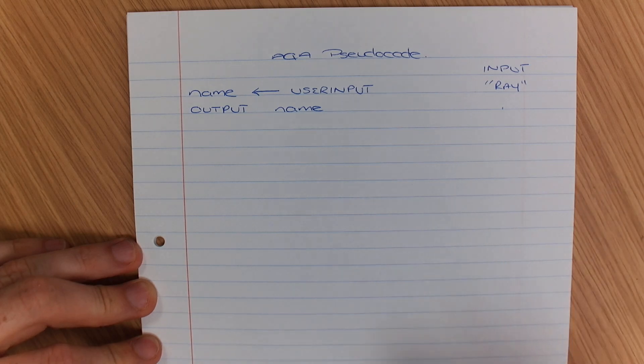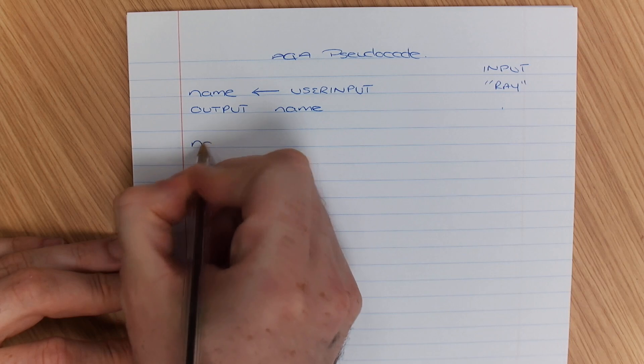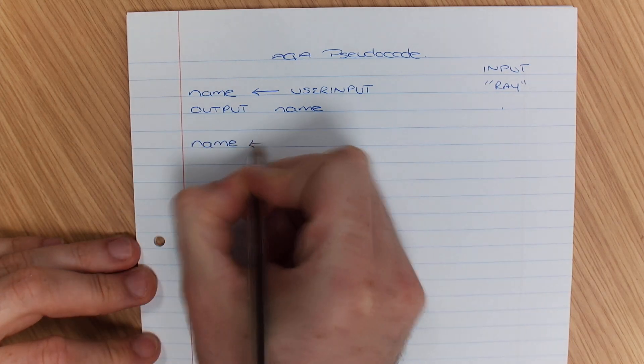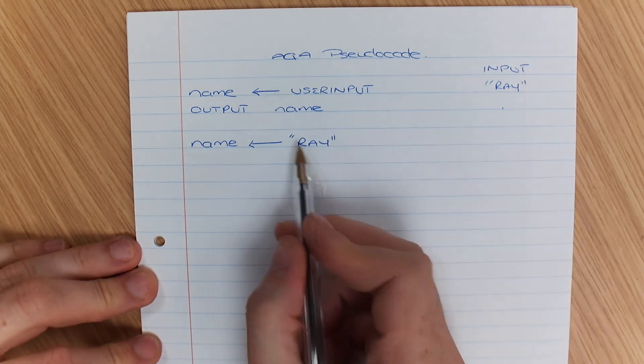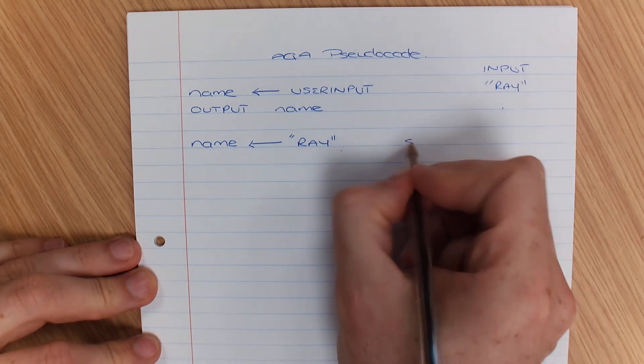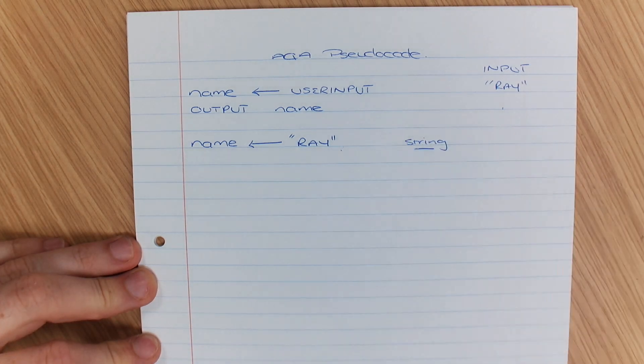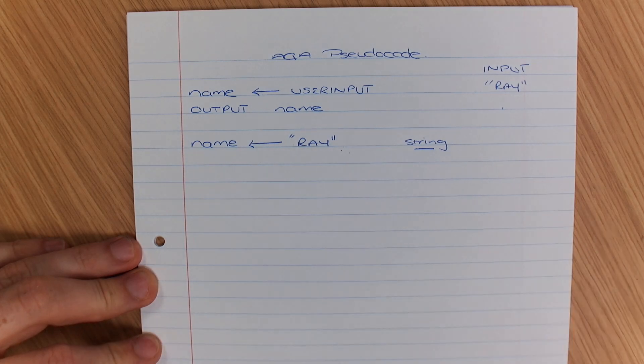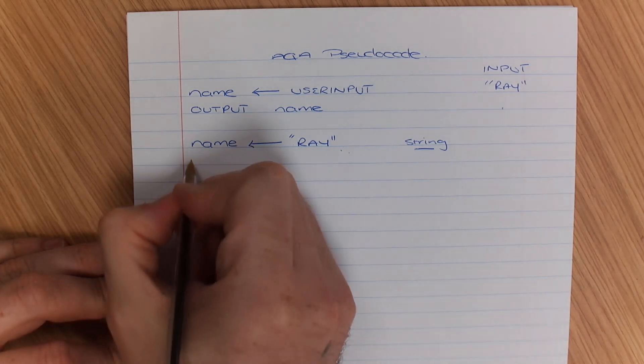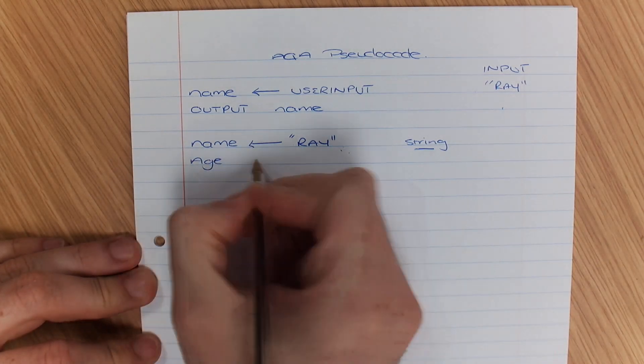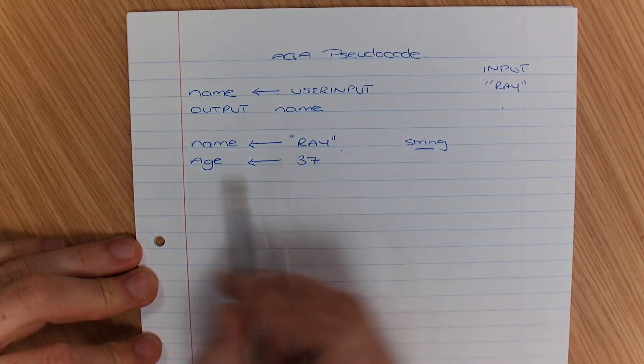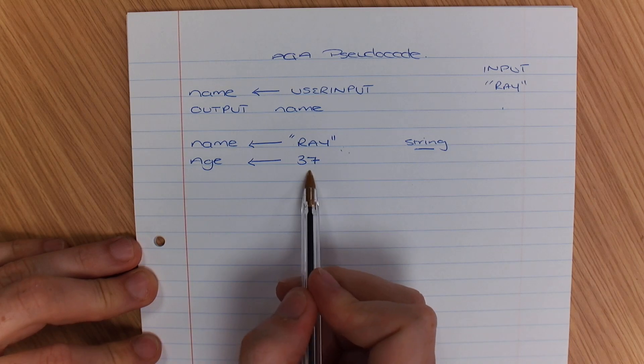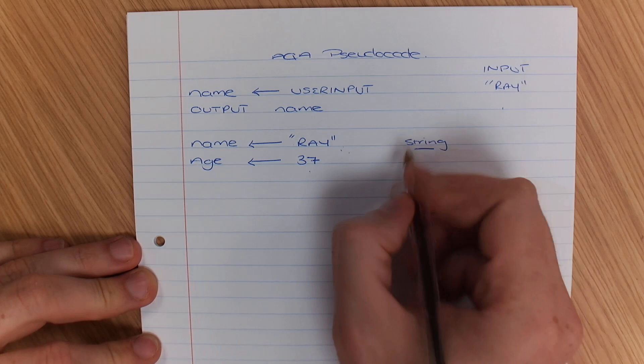Remember, if I am declaring a variable, so if I said, let's do another program here, name is ray, that is turning it into a string. I'm just putting it over here so you know the data type. Anything you put speech marks around make it into a text format. If I did age and allocated that 37, that now means that that is an integer because there are no speech marks around it. So that's an integer.